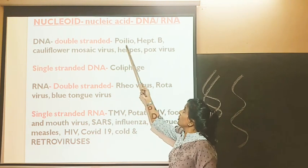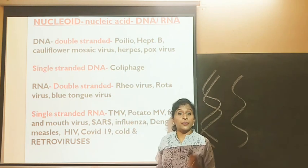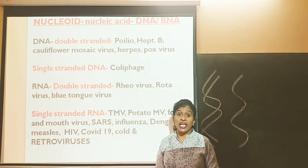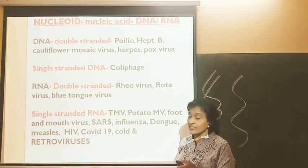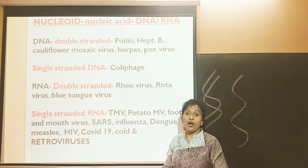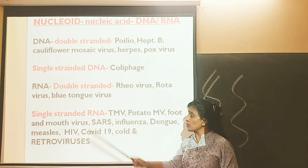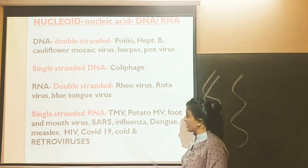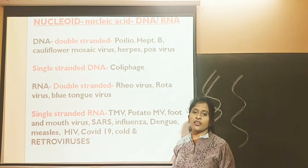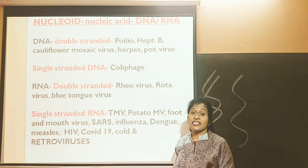Viruses that cause polio, hepatitis B, mosaic virus in cauliflower, herpes, or pox viruses have double-stranded DNA. Reovirus, rotavirus, or bluetongue virus will have double-stranded RNA. Some viruses have single-stranded RNA, such as tobacco mosaic virus, foot and mouth virus, SARS, influenza, Dengue, measles, HIV (the AIDS virus), COVID-19, and retroviruses. HIV virus is a retrovirus.